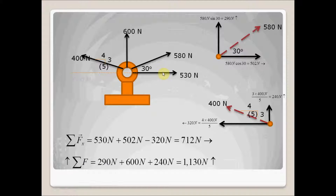For summation of forces in the y-direction, the sign convention is up is positive. The purely horizontal force has no y-component. The first angular force contributes 290 newtons upward — positive. The vertical force is 600 newtons upward — positive. The second angular force contributes 240 newtons upward — positive. All terms are positive; summing them gives 1130 newtons acting upward.